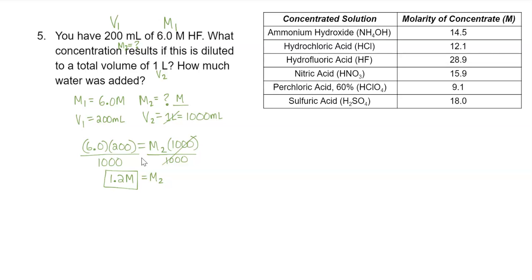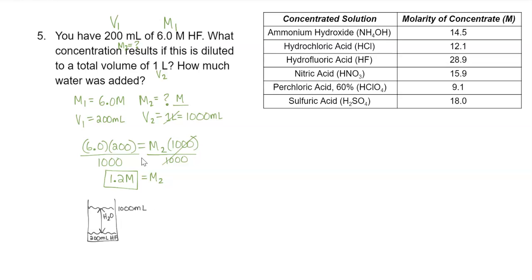Then we have to ask how much water was added. When preparing a dilution, a small portion is our 200 milliliters of concentrated HF, and the rest of the solution is made up of water. We wanted a total volume of one liter or 1,000 milliliters. So 1,000 milliliters minus 200 milliliters of HF — 1,000 minus 200 means we need 800 milliliters of water.